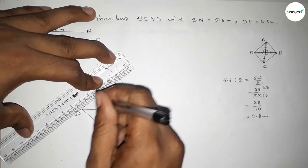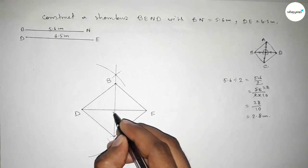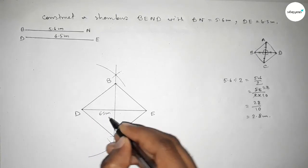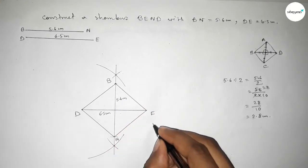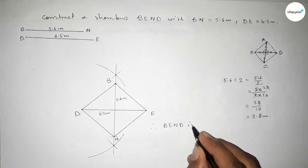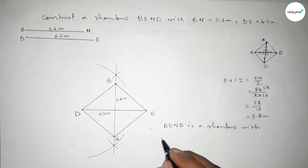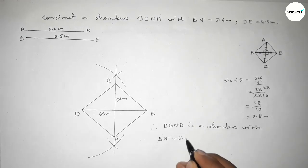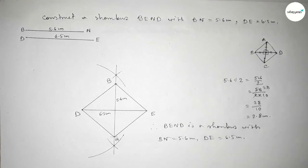So the diagonal, this diagonal is 6.5 centimeters and this diagonal is 5.6 centimeters. Therefore, BEND is a rhombus with given two diagonals: BN equal to 5.6 centimeters and DE equal to 6.5 centimeters. That's all, thanks for watching. Please share it.